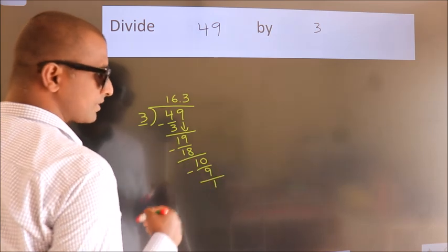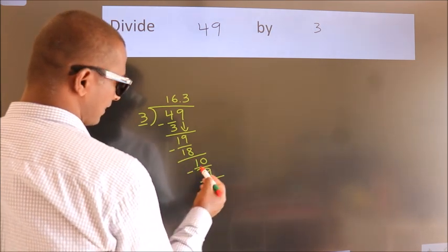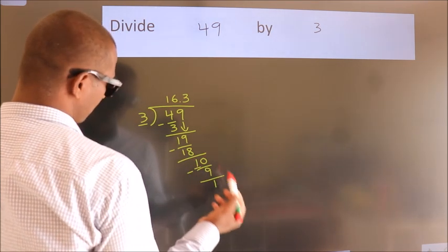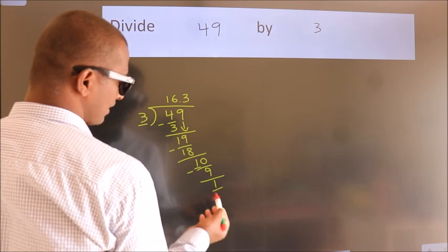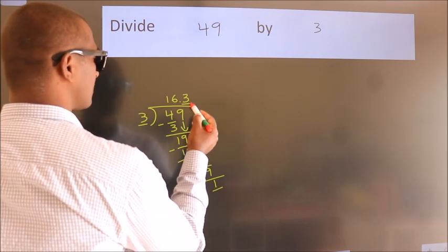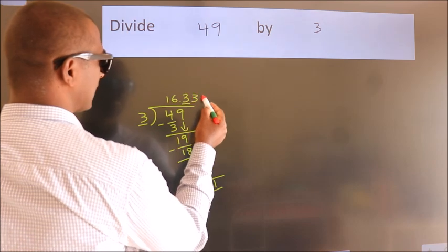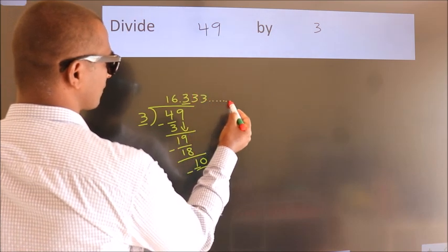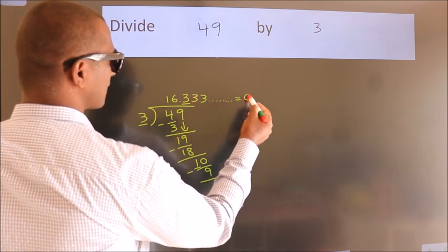Now you observe. We had 1 here, and we got 1 again. That means this number keeps on repeating. So this is our quotient.